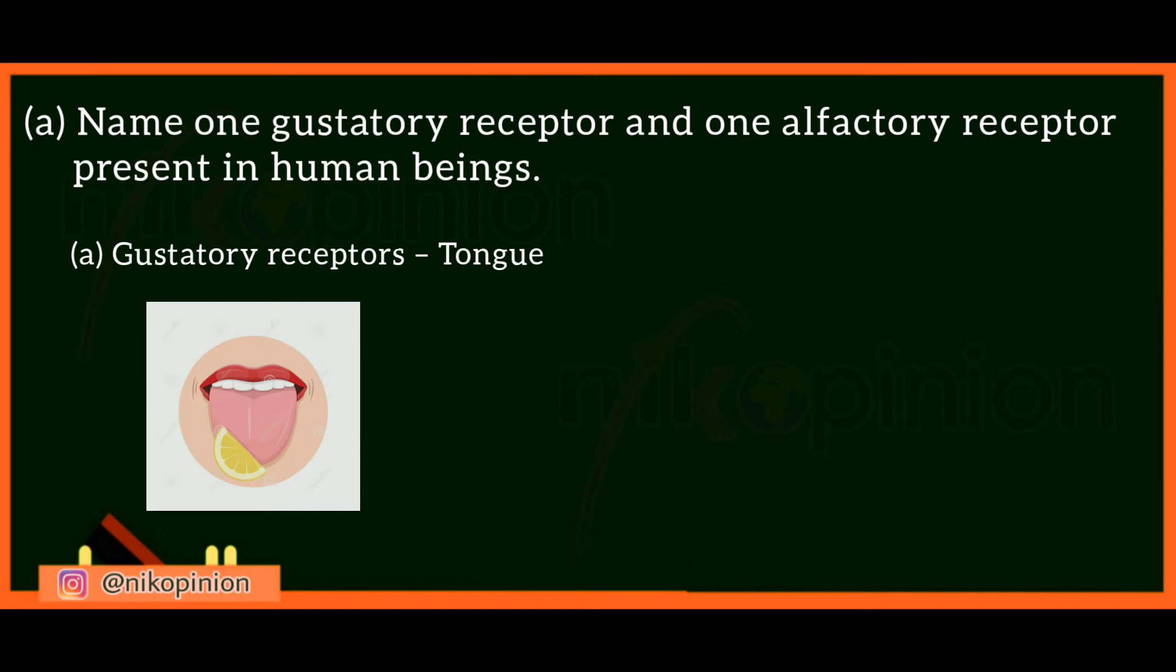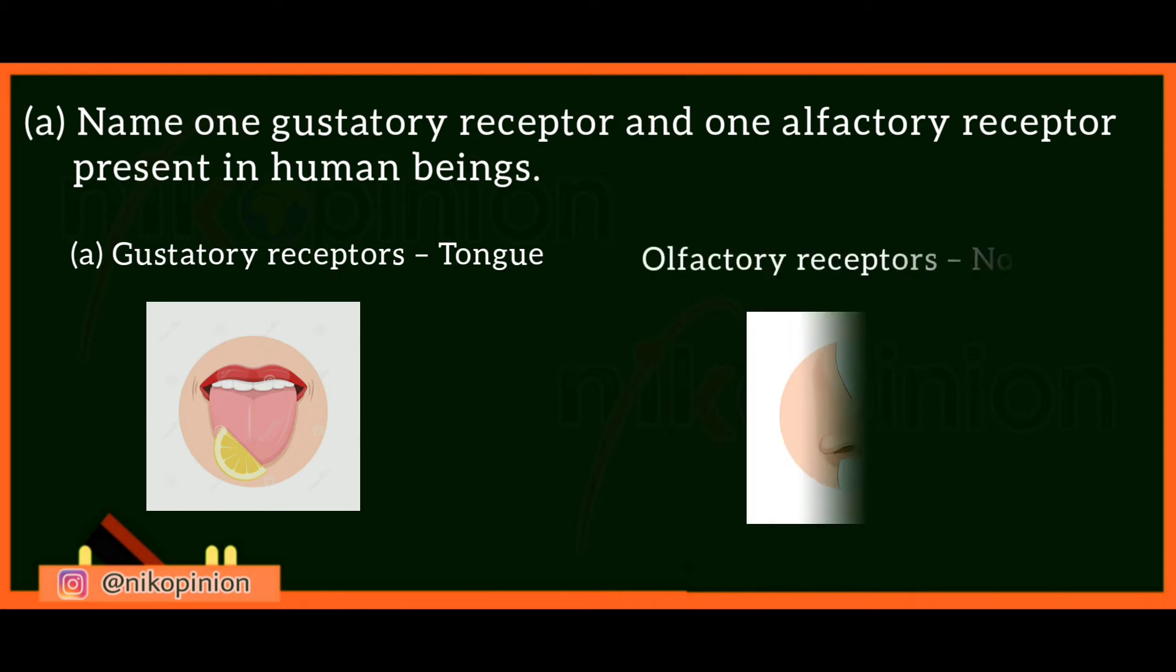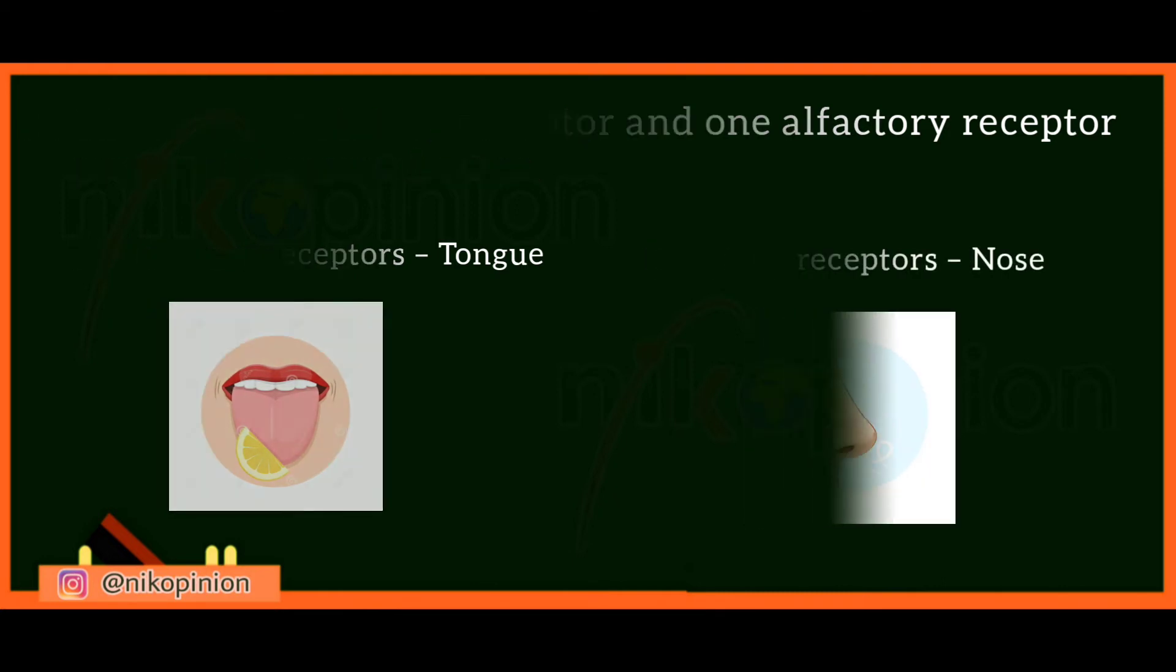And the next one is olfactory receptors. Olfactory receptors are the receptors which are used to detect the odor or smell. To detect odor and smell, which receptor in the body do we have? It is the nose. Obviously, very easy question.